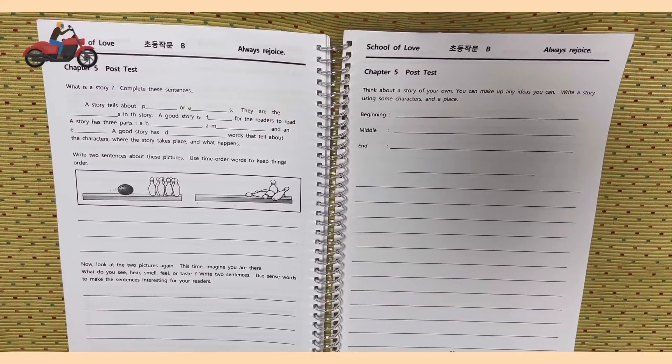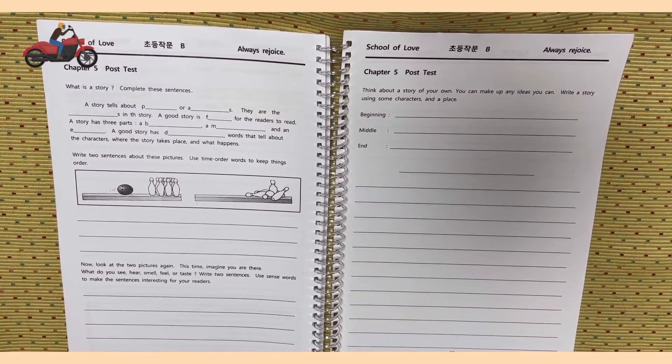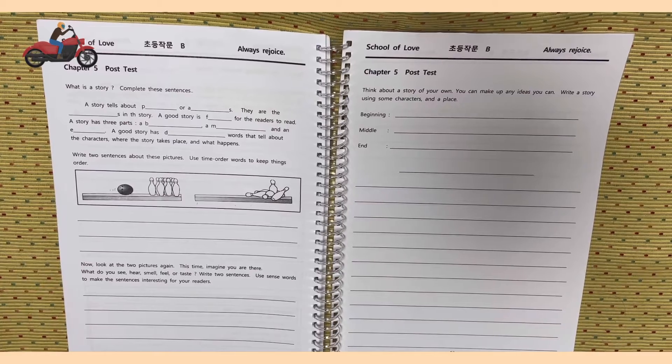What's the story? Complete these sentences. A story tells about P blank or A blank S. They are the blanks in the story. A good story is F blank for the readers to read.